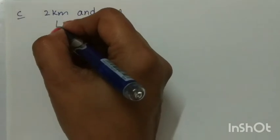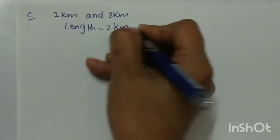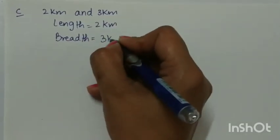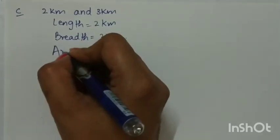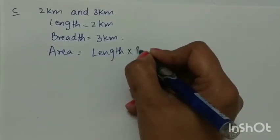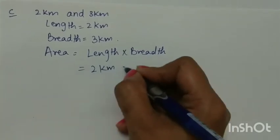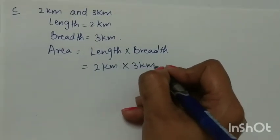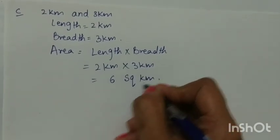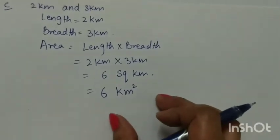Part C: the sides are 2 kilometers and 3 kilometers. Length is 2 kilometers and breadth is 3 kilometers. We have to find the area. Area of rectangle is length multiplied by breadth. Length is 2 kilometers and breadth is 3 kilometers, and 2 times 3 is 6 square kilometers. We can also write it as 6 kilometer square.